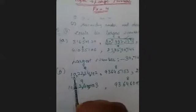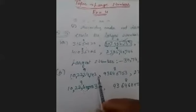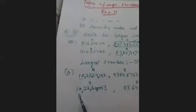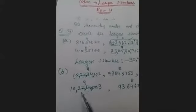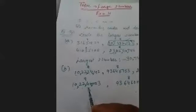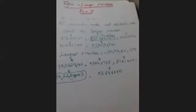This number is 10 crore, 22 lakh, 34,102 and the other is 10 crore, 22 lakh, 40,000. Comparing: both start with 10 crore — same. Both have 22 lakh — same. But here we have 34,000 versus 44,000. So the number with 44,000 is the largest among all five numbers. Our largest number is 10 crore, 22 lakh, 40,000.